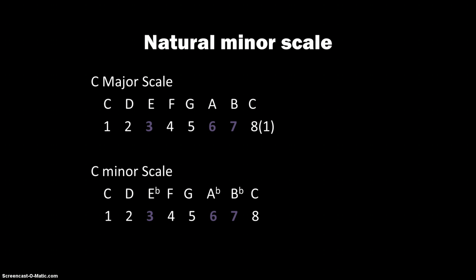So now we have C, D, E flat, F and G are the same, A flat, B flat, back up to C. This is what the C natural minor scale sounds like.